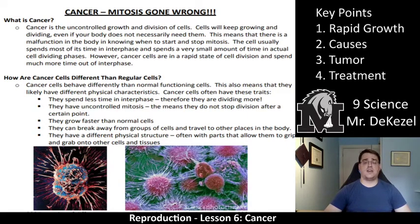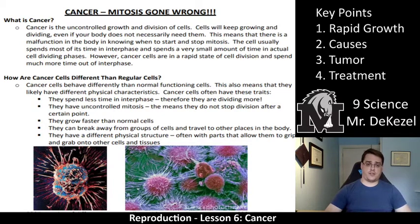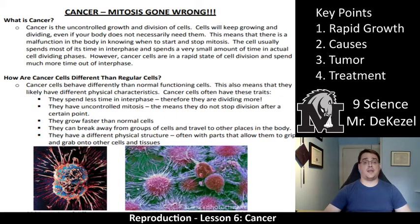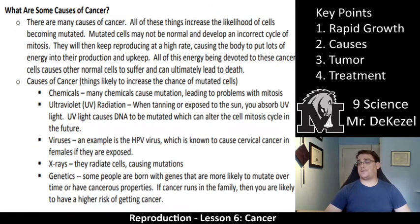So cancer cells are very rapidly growing and invasive. Regular cells spend most of their time just doing their job. When it's time to replicate, they do that, and then they spend most of their time again doing their job. That is not the case with cancer cells — cancer cells are just rapid, rapid growth.